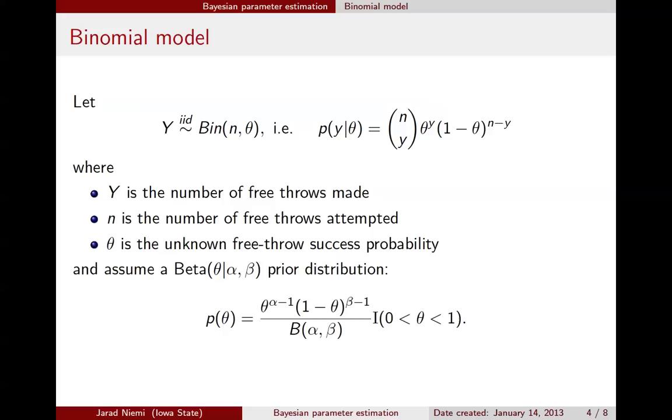All right, so what we're going to assume for the purpose of this mini-lecture is that the parameter theta, which is the unknown free throw success probability, we're going to assume it has a beta distribution, a priori, with parameters alpha and beta. That is, before we observe any data, we believe that this parameter has a beta distribution with some hyperparameters, alpha and beta. And what's written down here is the probability density function for this parameter with that assumption, that beta distribution assumption right here.